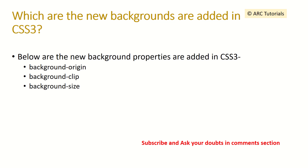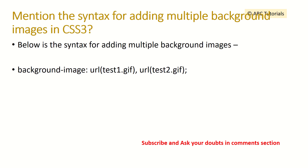Which new background properties were added in CSS3? The new properties are background-origin, background-clip, and background-size. To add multiple background images, you define the background-image property as: background-image: url('first-image'), url('second-image') — and so on, comma-separated.